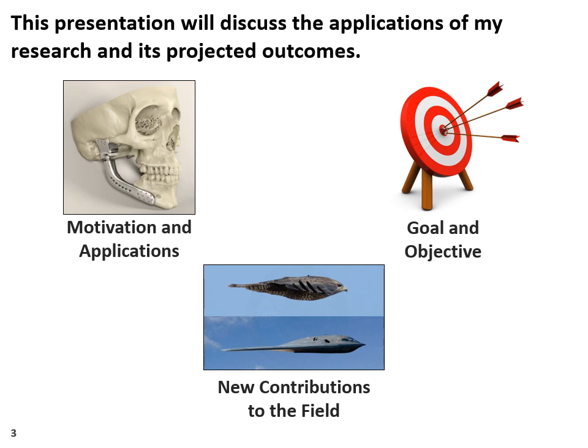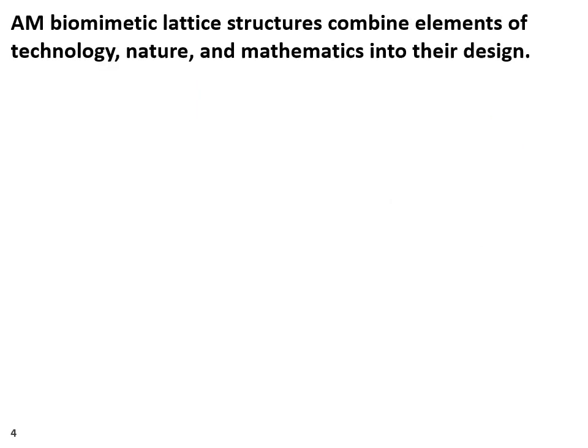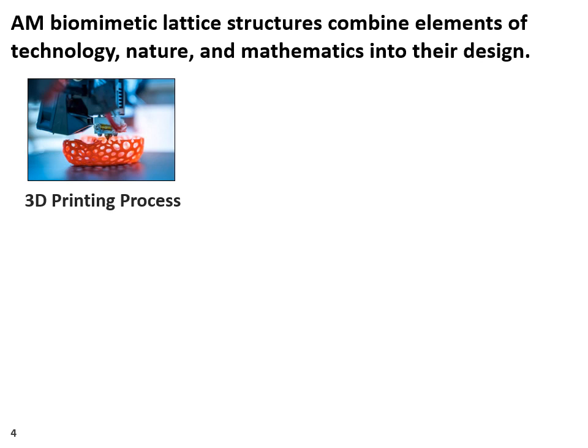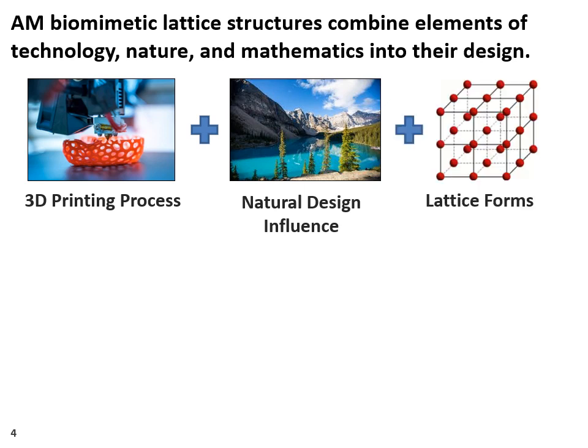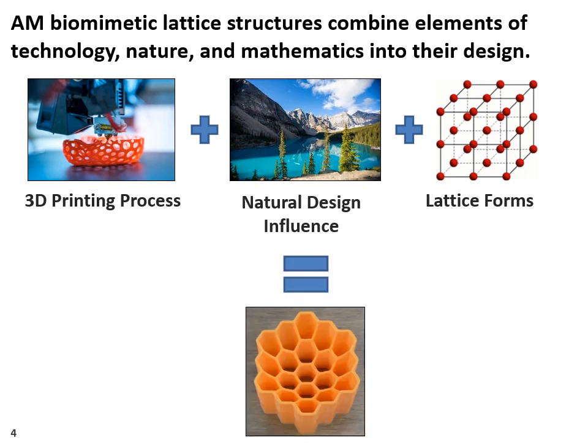What exactly is an additively manufactured biomimetic lattice structure? If we break it down into components, it is actually quite easy to understand. First and foremost, it is a part that is created using a 3D printing process, which can be any method of 3D printing for the general definition. Next, the user integrates some form of natural influence in the part design, which typically comes in the form of cellular shapes or natural geometries. Then, we tessellate and repeat that natural design in three dimensions to create a lattice form. The sum of these three components gives us our final product. A fine example of an AM biomimetic lattice is this honeycomb, as it incorporates all three of the above listed components.